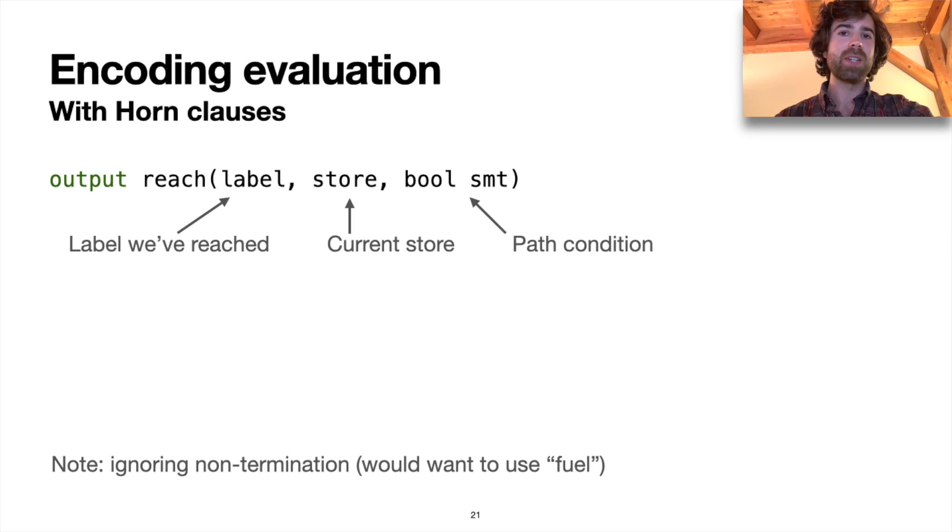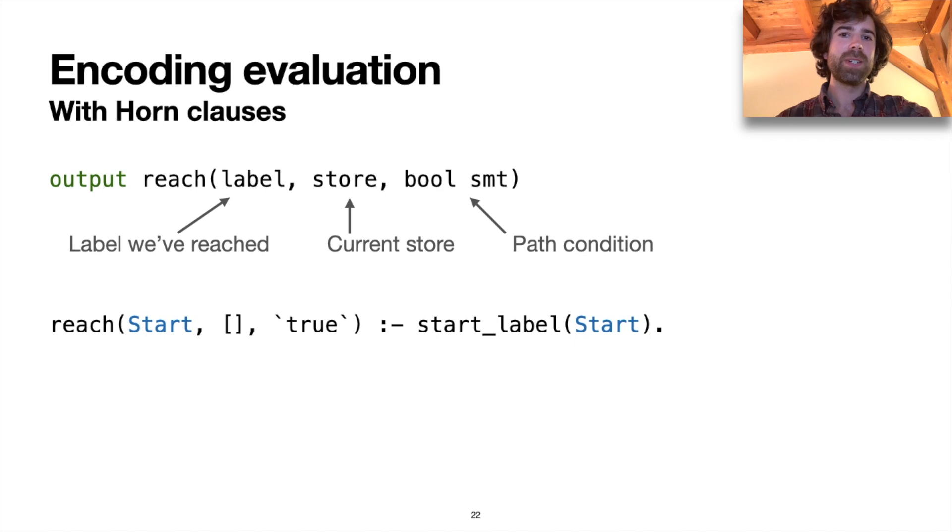And I'll just mention in passing, I'm going to ignore the issue of how we ensure that our evaluator actually terminates. Okay, so here is the base case for our evaluator. This HORN clause here says that the start label is reachable with an empty store and the path condition true. And the way to read one of these HORN clauses is as a logical implication with the right side implying the left side.